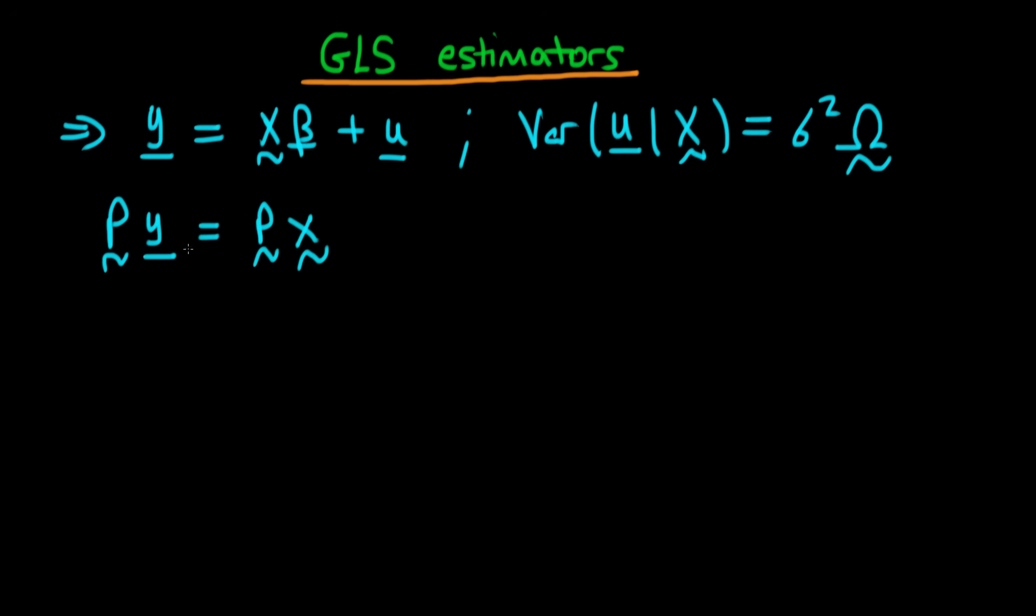Then we're going to have Py equals P times X times beta plus P times u. And the idea here is that the transformation matrix P should be such that the variance of Pu given X is just equal to sigma squared times the identity matrix, or at least something times the identity matrix, because then we have homoskedastic errors.